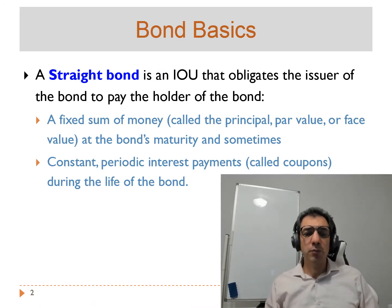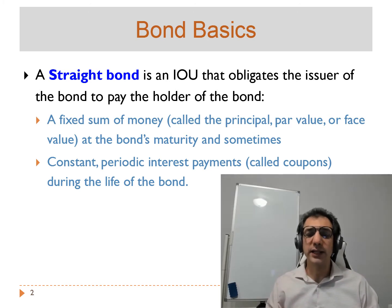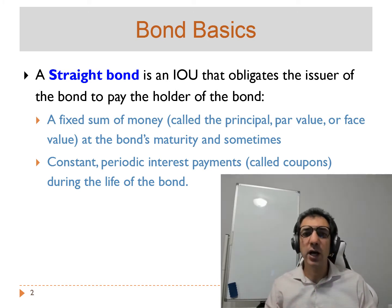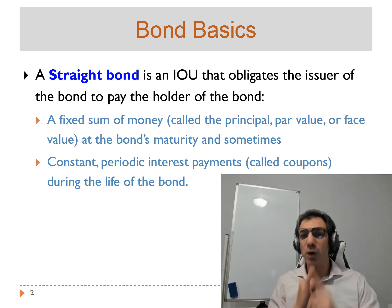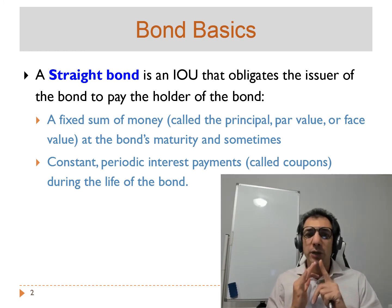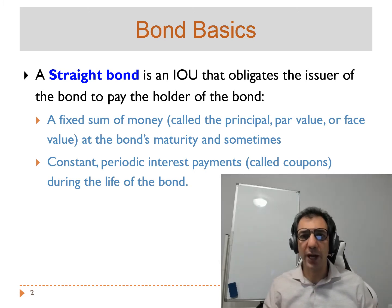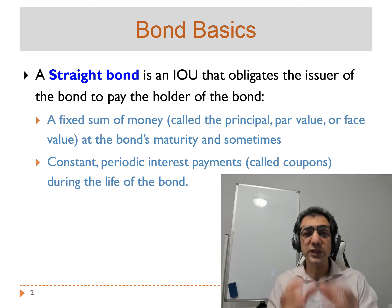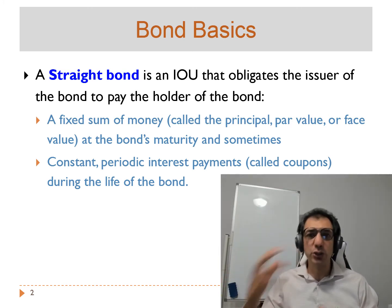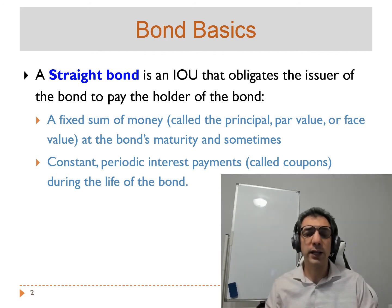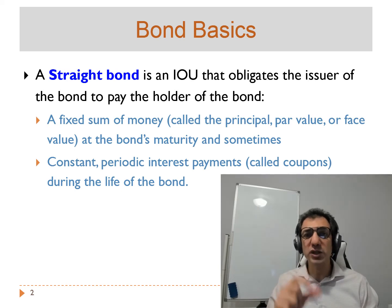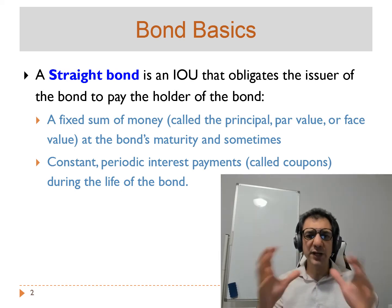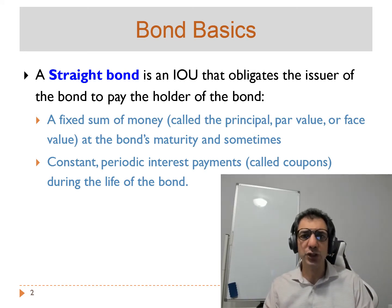When we talk about a bond, most of the time we are talking about something called a straight bond, which is an IOU that obligates the issuer of the bond to pay the holder of the bond first a fixed sum of money called the principal, par value, or face value, and second, periodic interest payments which are called coupon payments. There are two types of payments: the face value, which is a lump sum you receive as a bond holder at the expiry or maturity date, and also equal periodic interest payments you receive over the life of the bond.